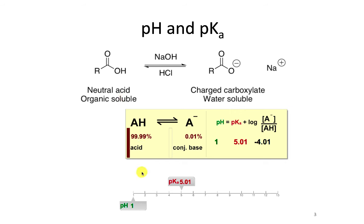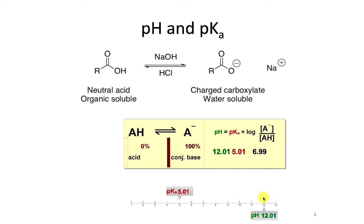So at a pH of 1, we expect this carboxylic acid to be organic-soluble. At a pH of about 11 or 12, we expect that species to be water-soluble.